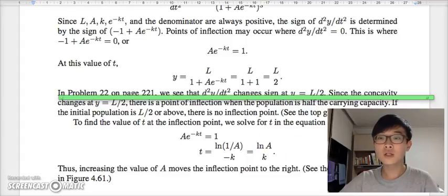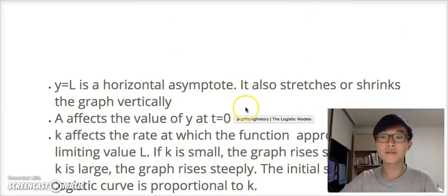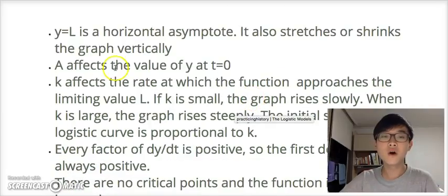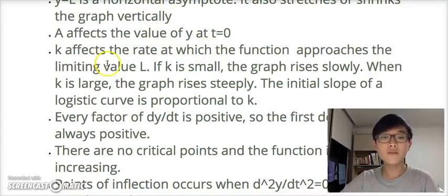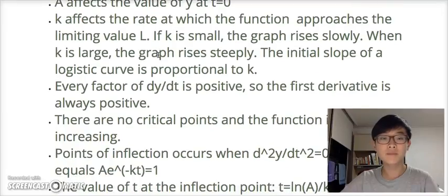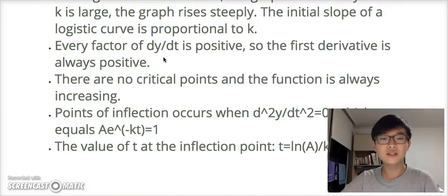Let's summarize the major points of this logistic model. y equals L is the horizontal asymptote. It also stretches or shrinks the graph vertically. The parameter A affects the value of y at t equals 0. k affects the rate at which the function approaches the limiting value L. If k is small, the graph rises slowly. When k is large, the graph rises steeply. The initial slope of a logistic curve is proportional to k. Every factor of dy/dt is positive, so the first derivative is always positive. There are no critical points and the function is always increasing. Points of inflection occur when Ae^(-kt) equals 1. The value of t at the inflection point equals ln(A)/k.